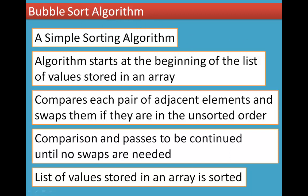Sorting means arranging elements in order. The algorithm is going to start from the first value at the beginning of the list. This is an array. The first element is going to start the array, and the other elements are going to be compared. Elements in the middle are going to be switched in order.